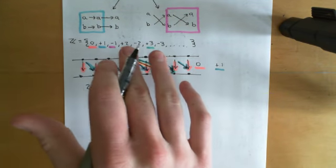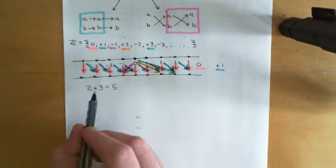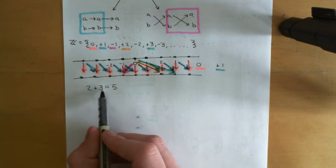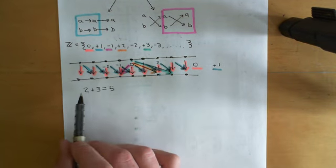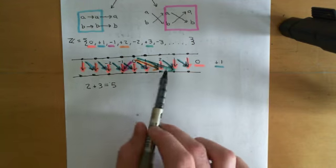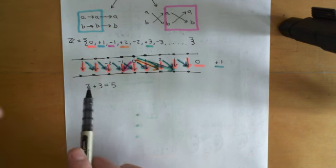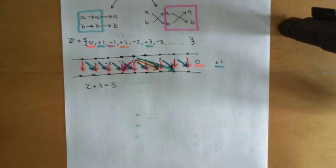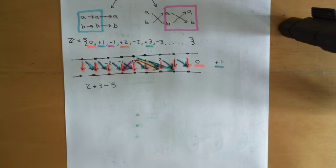Let's think of that in terms of composition of set permutations. This means: do three first and then do two. Three will move every point three to the right. If you follow that by two — moving everything two to the right — then overall you've moved everything five to the right. Hence, these two composed together give five — they compose to give the mapping five.